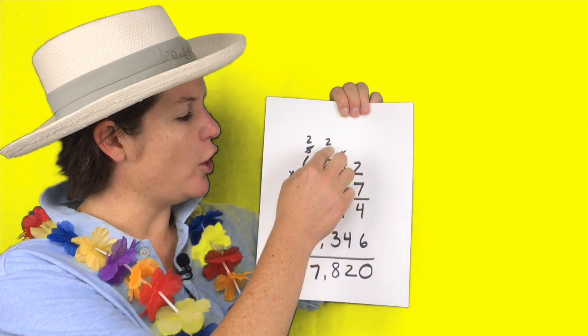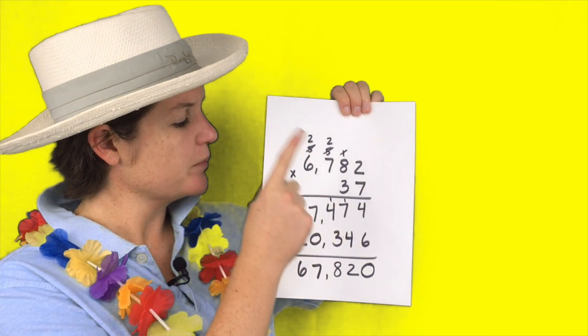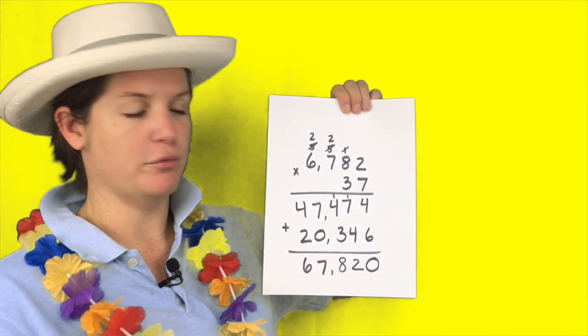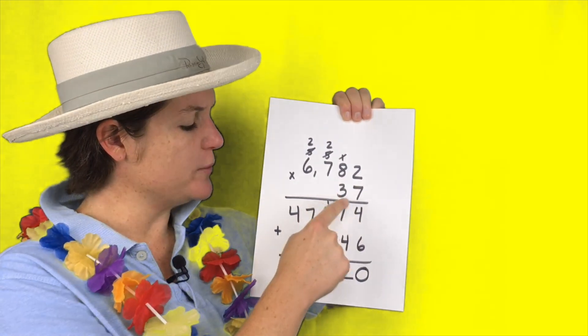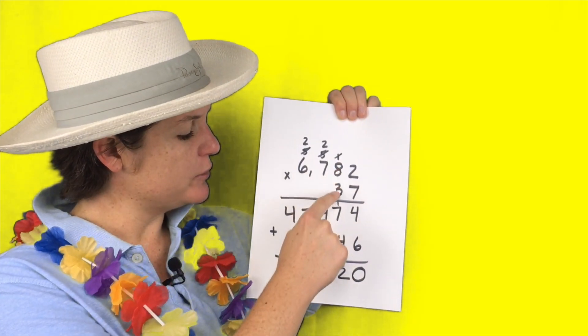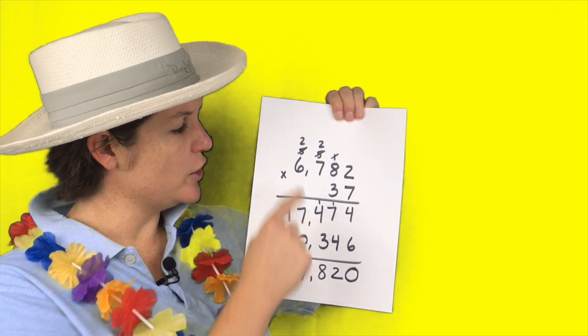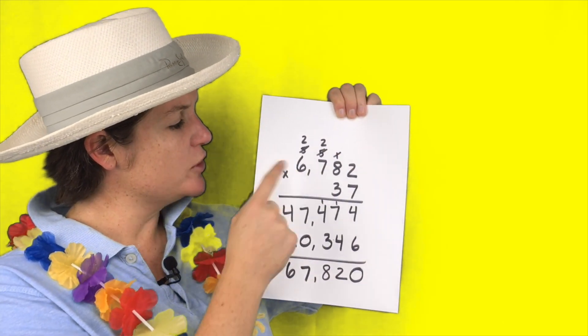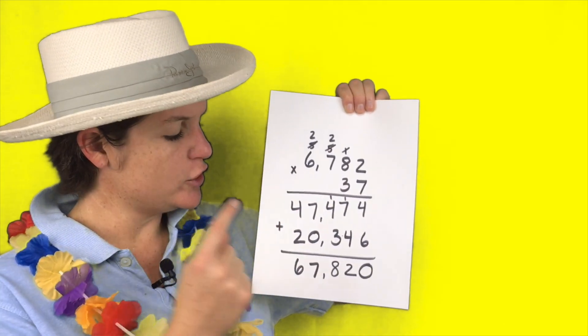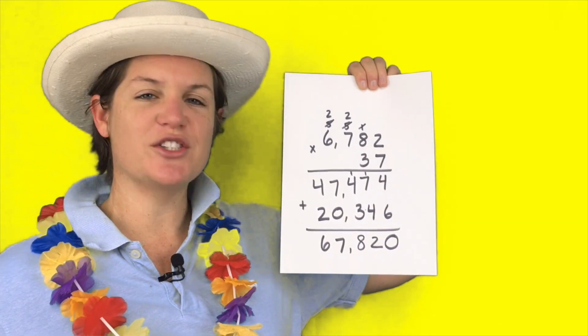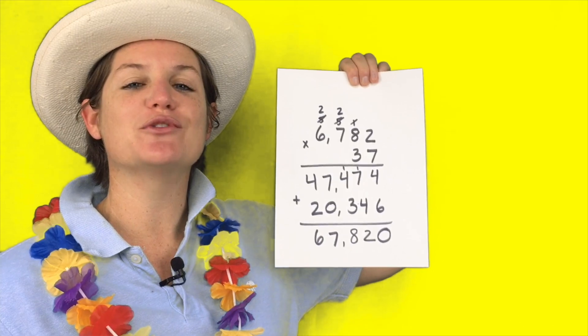That's my first product. Now I've crossed out all the numbers I regrouped, and I'm multiplying times the 3 now. So 2 times 3 is 6. 8 times 3 is 24. 3 times 7 plus 2 is 23. 3 times 6 plus 2 is 20. Then I added them up and got 67,820.